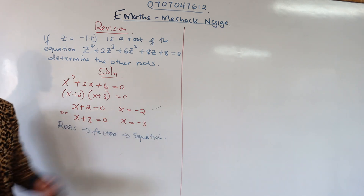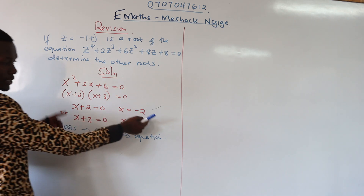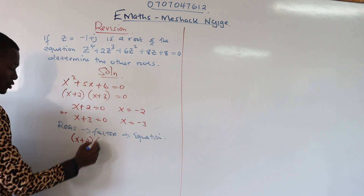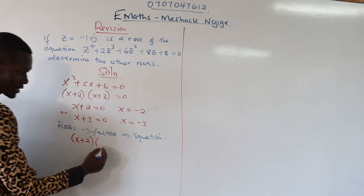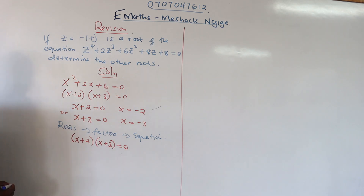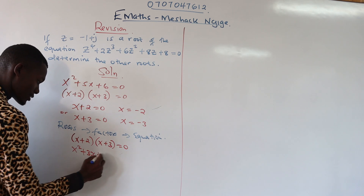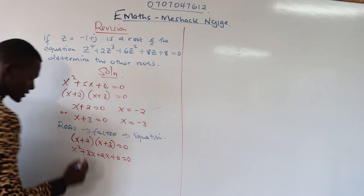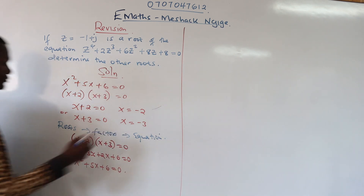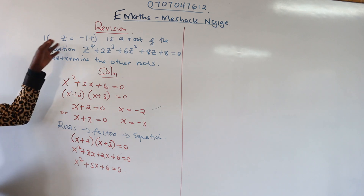So from roots negative 2 and negative 3, we return them to the other side: x plus 2 and x plus 3. Expanding these gives x squared plus 3x plus 2x plus 6, which equals x squared plus 5x plus 6 equals 0. You can see we've reconstructed the original equation from the roots — this is the key idea we'll use.